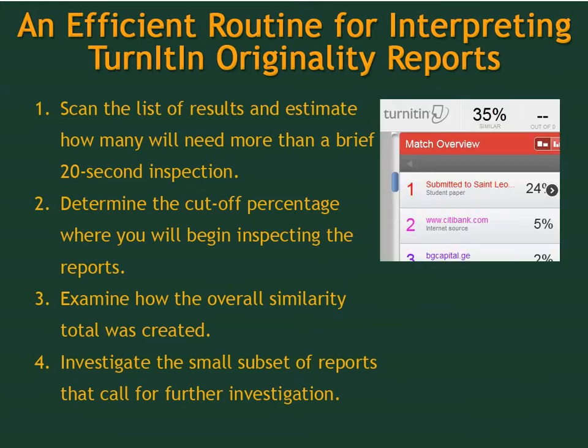Step 3: Now that you're looking at a detailed similarity report, look at the list of sources used on the right side. Evaluate the list by looking at how the overall total was created. If only one or two sources provide the majority of a percentage, it's usually a bad sign. However, if the total is made up of many individual sources that contribute only one or two percent each, those matches are usually no cause for concern. For example, a 35% match made up of three different matches — 12%, 12%, and 11% — is likely to need more investigation than a 35% match made up of about twenty one-to-two percent matches. A good practice is taking no more than twenty seconds to decide whether or not a side-by-side detailed investigation is warranted. If it isn't, move on.